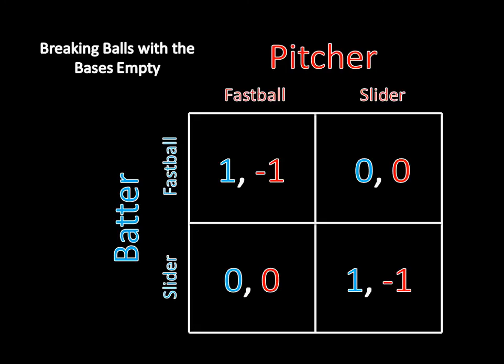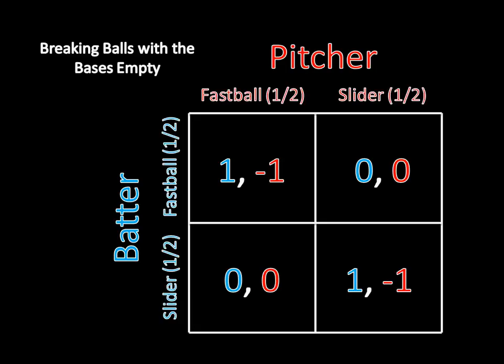The batter will guess fastball or slider, and the pitcher will pitch a fastball or slider. If the batter guesses correctly, he gets one point and the pitcher loses a point. If the batter guesses incorrectly, it's zeros all around. This is a game of matching pennies, and we know the equilibrium requires players to mix at one half, one half — a mixed strategy Nash equilibrium. Each player must be random; otherwise the other will capitalize on a pattern.